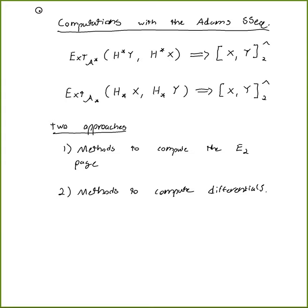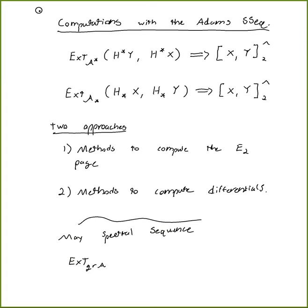Before doing anything, I want to outline three broad systematic ways of approaching these computations. The first is the May spectral sequence. This is a spectral sequence that starts at a similar-looking group: Ext over the associated graded of the Steenrod algebra — or, in the homological version, the dual — of the homology of X and the homology of Y. And this converges to the Adams E2 page.